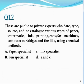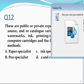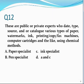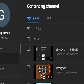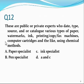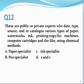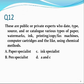Number twelve. These are public or private experts who date, type, source, and catalog various types of paper, watermarks, ink, printing copy, box machines, computer cartridges, and the like using chemical methods. The answer is delta: paper and ink specialist. They are experts in paper and ink, like in the determination of watermarks.